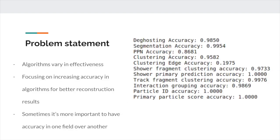For this project, the main problem that I wanted to work on was improving different functions in machine learning algorithms using accuracy as a metric. As is shown on the right, most of the accuracy fields are fairly high, but some others are dismally low, so I wanted to focus on increasing accuracy as high as possible to improve the results of reconstruction.